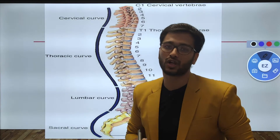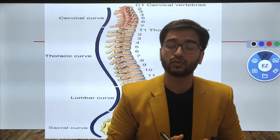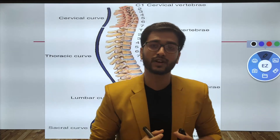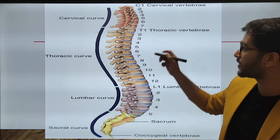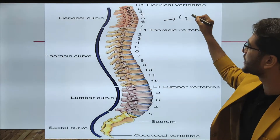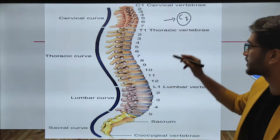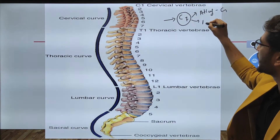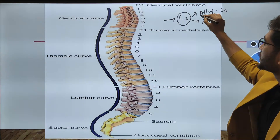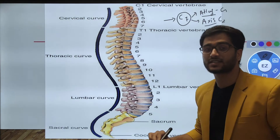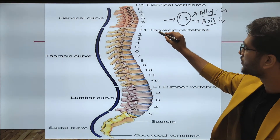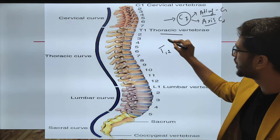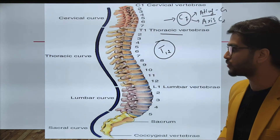The vertebral column gives attachment to the ribs at the posterior level. It can be divided according to position. Vertebrae at the level of the neck are known as cervical vertebrae, and there are 7 of them. The first vertebra is known as the atlas and the second as the axis, with C1 representing atlas and C2 representing axis. Vertebrae that articulate with ribs are the 12 thoracic vertebrae.